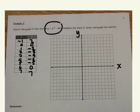First point is located at negative 1 and positive 7. Next point is at 0, 0, then we have positive 1, negative 5.